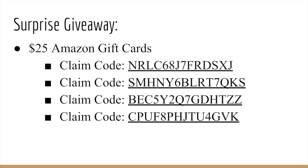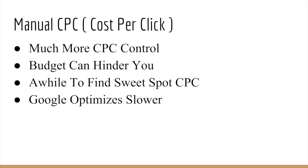Now let's move on to manual CPC. Manual CPC stands for manual cost per click, and it's exactly what it sounds like — you manually set your cost per click. This gives you much more control over your CPC. But you have to understand that you're completely alone; Google is not automatically going to adjust your bid to bring you as many clicks as possible. Google will try its very best to stay at the CPC that you set.